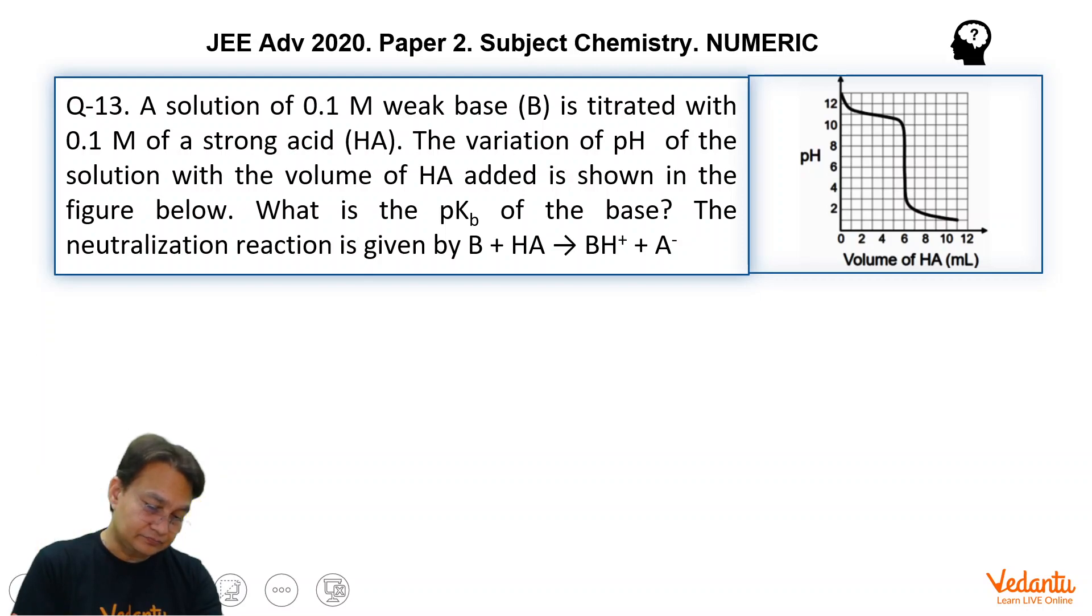In the graph you will find that the graph is initially like this, then it is getting straightened up and then it is going like this. The meaning of this straight line is that the titration is complete at this point. If you check this point, this is coming at the volume of 6 ml. So 6 ml is the equivalence point.